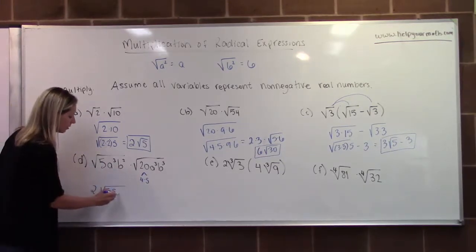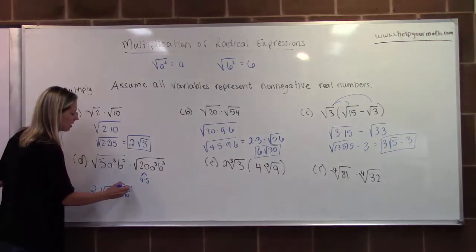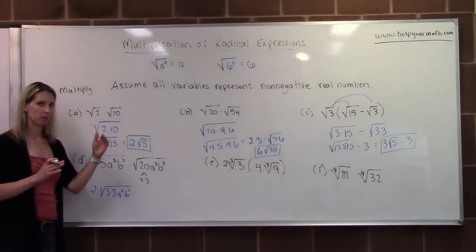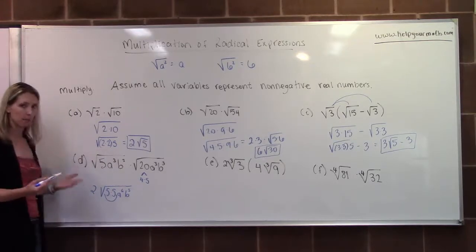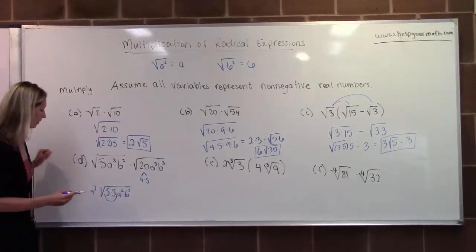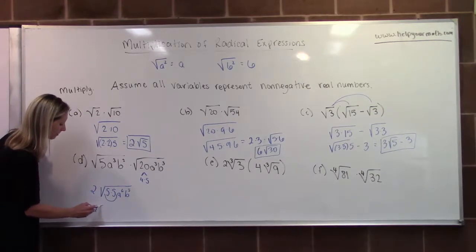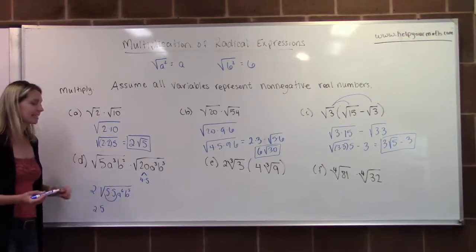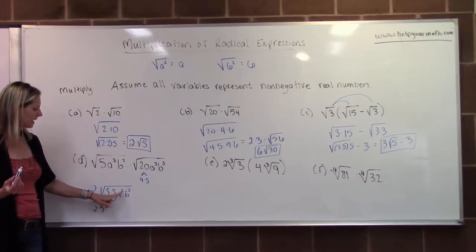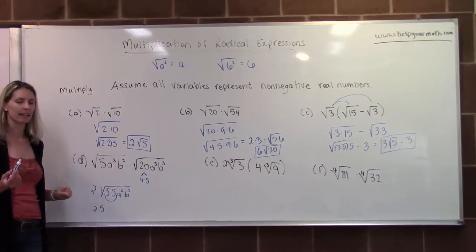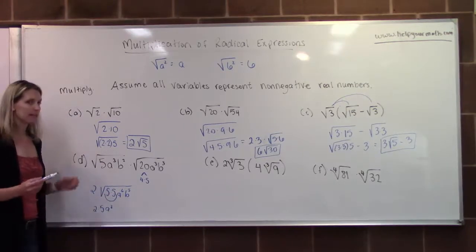A cubed times A cubed gives A to the 6th. B squared times B cubed gives B to the 5th. When combining variables with exponents, we add the exponents. Now 5 times 5 is 25, which is a perfect square, so a 5 pops out of the radical. We have 2 times 5. A to the 6th is also a perfect square — taking its square root, we divide the exponent by the index 2, giving A cubed. The B is a little trickier.